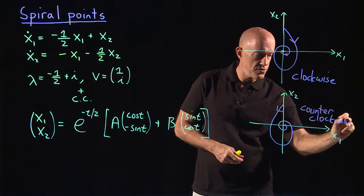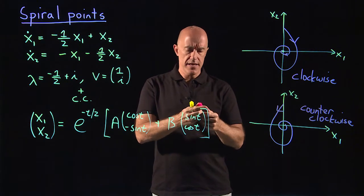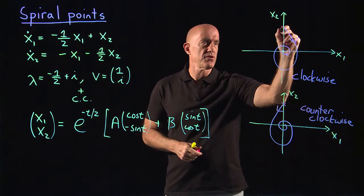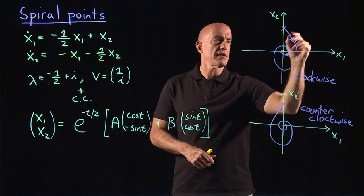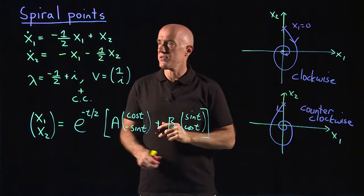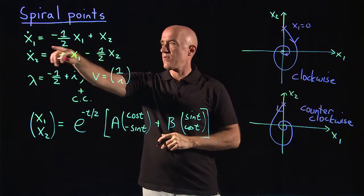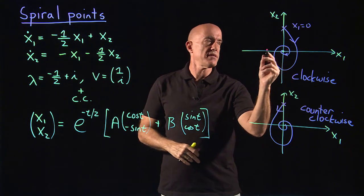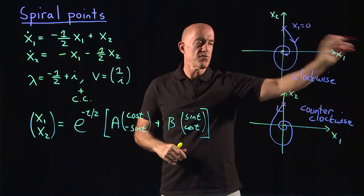So how do you tell which one it is? The simplest way is just to look at the point on the x2 axis. So here we have x1 equal to 0. At that point, and here also. If we look at x1 equal to 0, then we have x1 dot equals x2. So x1 dot equals x2, meaning that you're moving to the right.